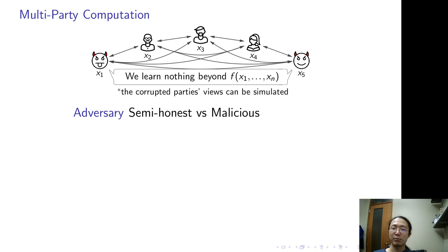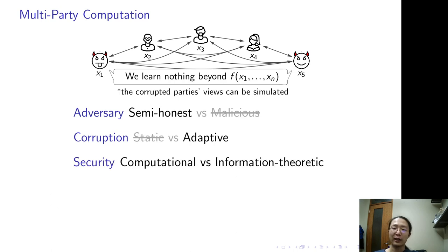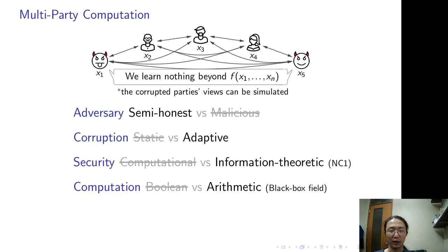MPC has many different settings. In this work, we consider semi-honest adversary. We allow the adversary to adaptively choose the next party to corrupt. And we consider information theoretical security for computing NC1 functions. The function can be either Boolean or arithmetic. They are as powerful in some sense, but emulating arithmetic computation by Boolean gates can be expensive. Our construction natively supports arithmetic computation and only needs black box field access.